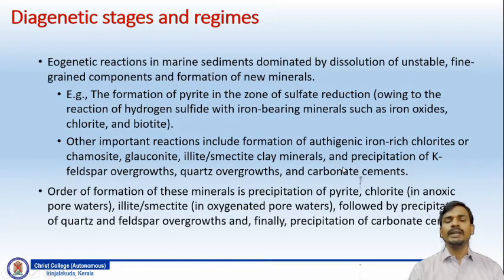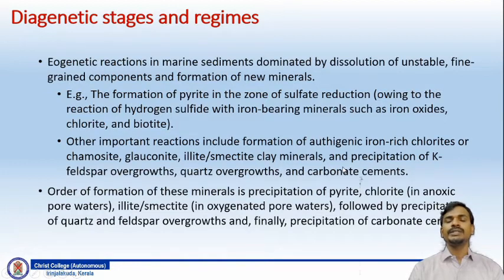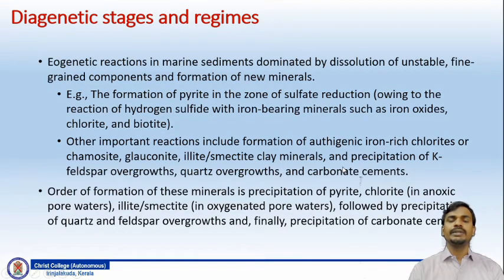The order of formation of these minerals is: first, precipitation of pyrite and chlorite in anoxic pore waters with the absence of oxygen; then illite or smectite, which happens in the presence of oxygen in the pore waters; followed by precipitation of quartz and feldspar overgrowths; and finally the precipitation of carbonate cement. These are some of the reactions and the formation of authigenic minerals that happen in marine sediments.